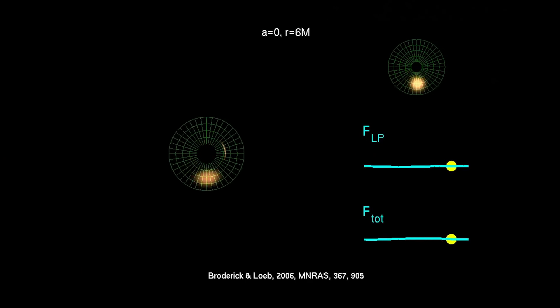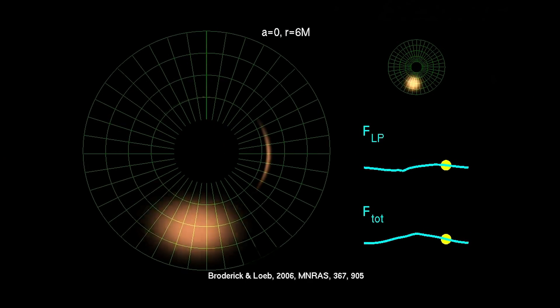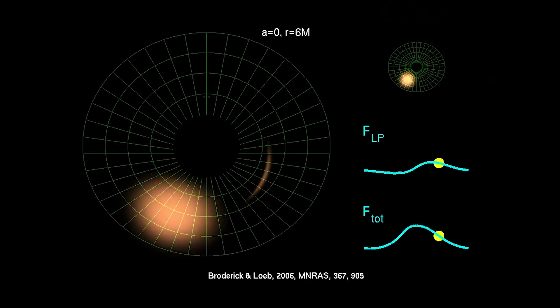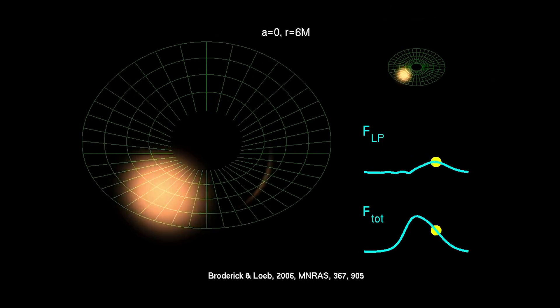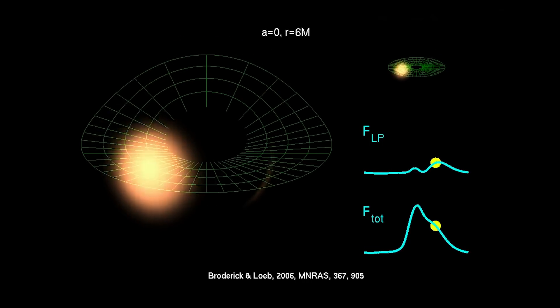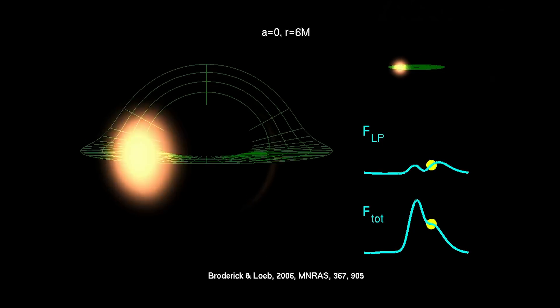Now, exactly how this disk appears to us is going to depend on our viewing angle. In the upper right-hand corner of this simulation, we can see a single hotspot in the accretion disk. As we change our viewing angle, we can see how the black hole's gravity distorts and brightens the hotspot as it rotates into our field of view. But all of this is purely theoretical. In order to test relativity, we need to make an image of a black hole, and if it looks anything like what we expect, that is pretty much the most stringent test of relativity we can come up with.